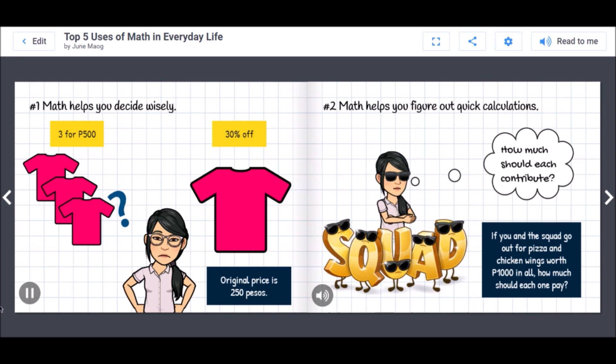This turns out to be 175 pesos. Then you figure out how much the shirt will be if you take the promo of three for 500 pesos. You find out that this promo will price the shirt at the lower price of 166 pesos and 67 centavos. So do you go ahead and buy three shirts right away?